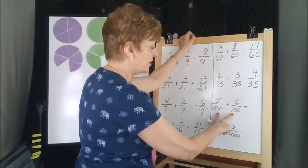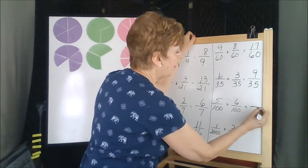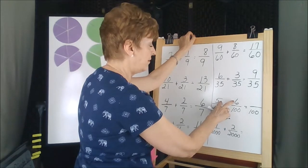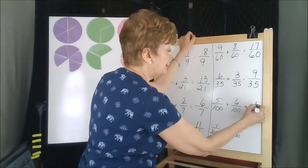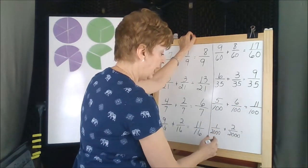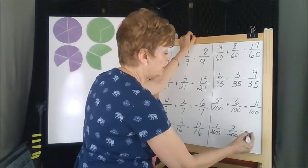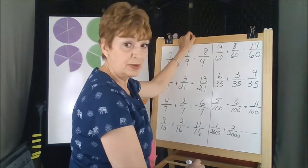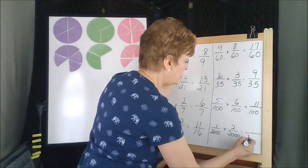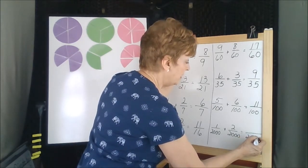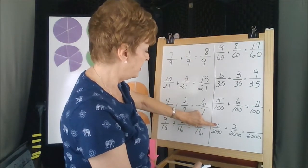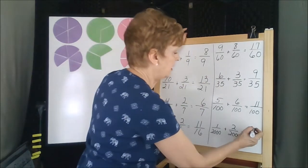The numerators are the same. So let's copy that over into our answer. And then add the five plus six is 11. And even when the numbers get huge, it's the same number on the bottom. So the size of the pieces are the same. 2000 is our copied over number. And then we're going to add the numerators. One plus two is three.